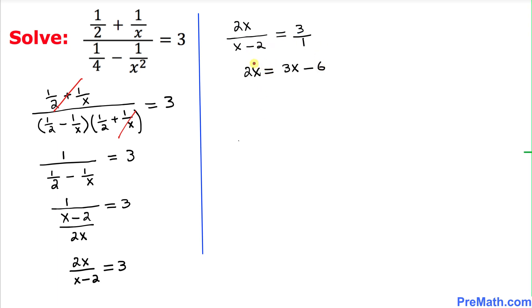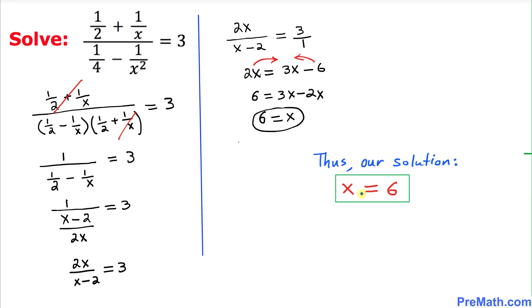Now we can easily solve for x. Let's move 2x on the right hand side and negative 6 on the left hand side. This negative 6 is going to become positive 6, and on the right hand side we have 3x - 2x. That means we have x equals 6, and that's our answer.